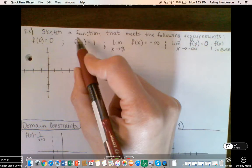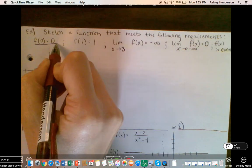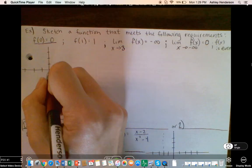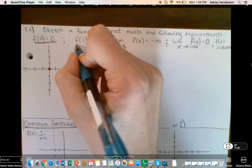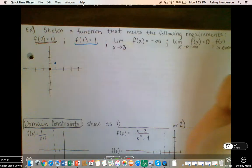So sketch a function that meets the following requirements. F of 0 equals 0. Well that one's pretty easy. What does that mean? That means when x is 0, y is 0, it's this one. F of 1 is 1, that means when x is 1, y is 1, also pretty easy.